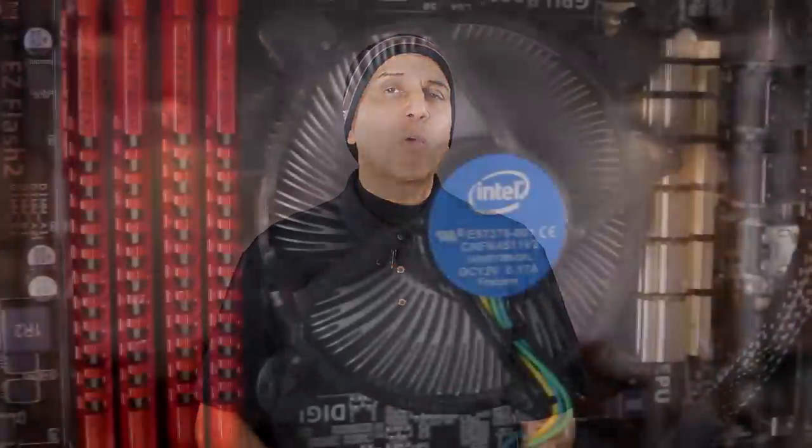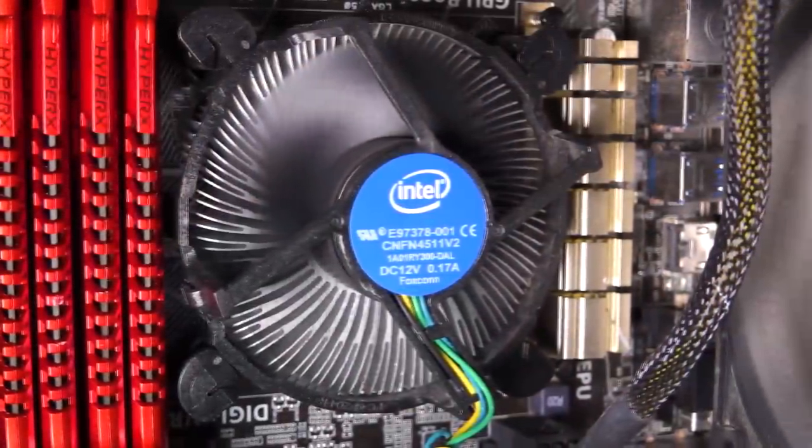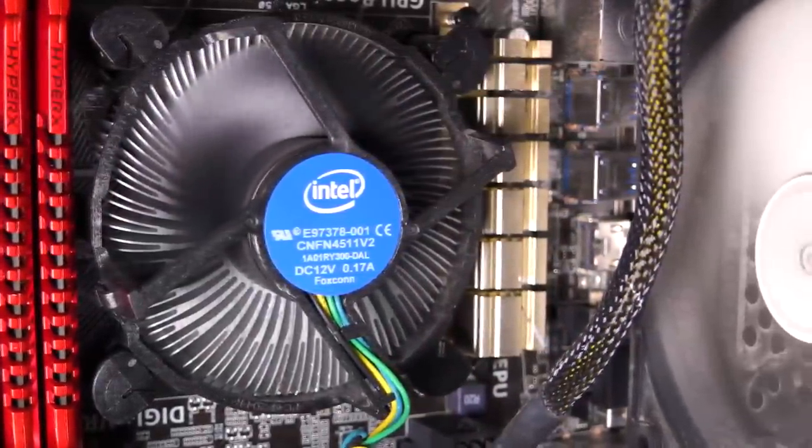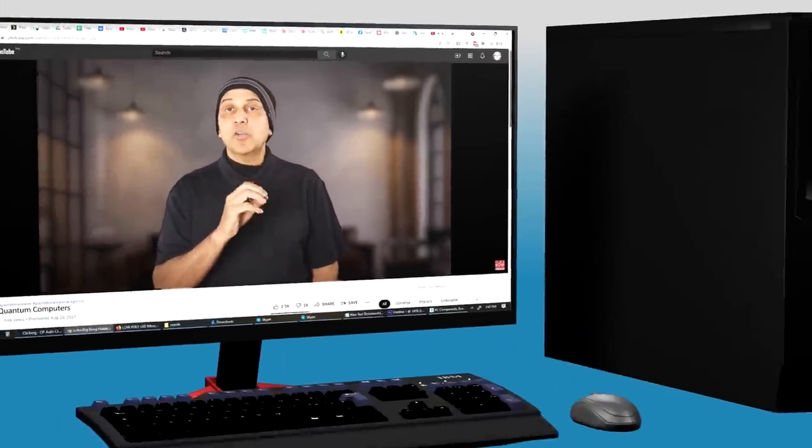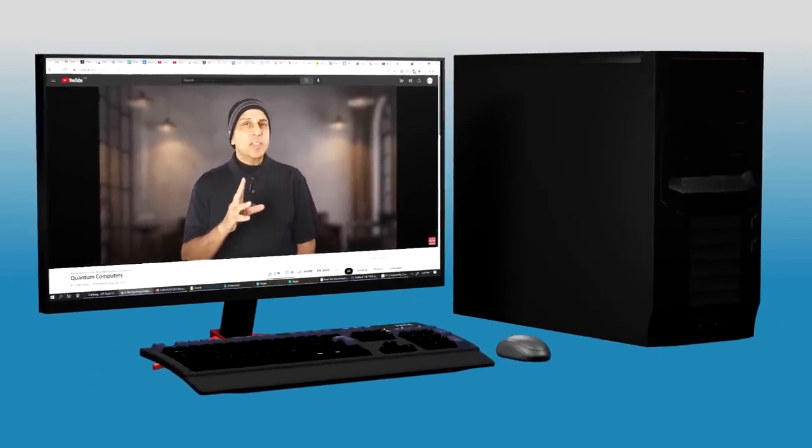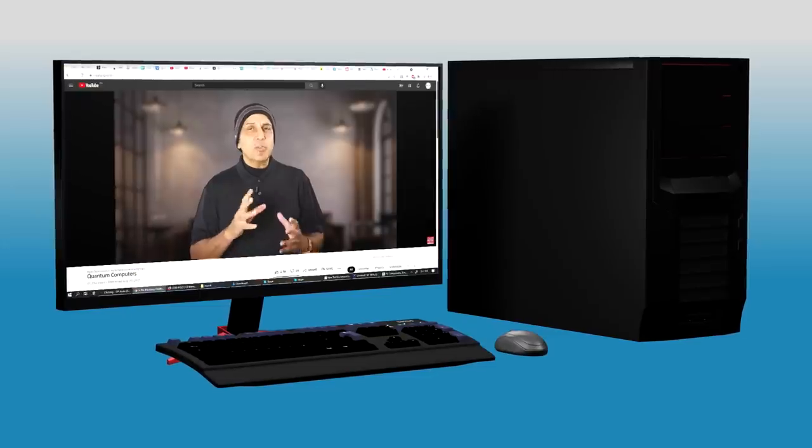In order to learn how a quantum computer works, we need a basic understanding of how an ordinary classical computer works. Both the classical and quantum computer share many general components. So let's look at some of these basic components shared by both types of computers.